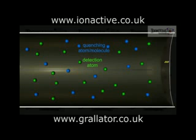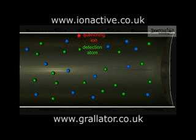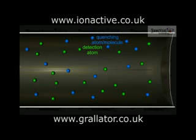Such quenching gases are designed to be easier to ionize than the detection gas, so that during migration to the cathode, the detection gas is neutralized by the quenching gas, which then becomes the positive ion migrating to the cathode. When the charged quenching gas ion recombines at the cathode, it does so in the ground state, so that further avalanche discharge is avoided.